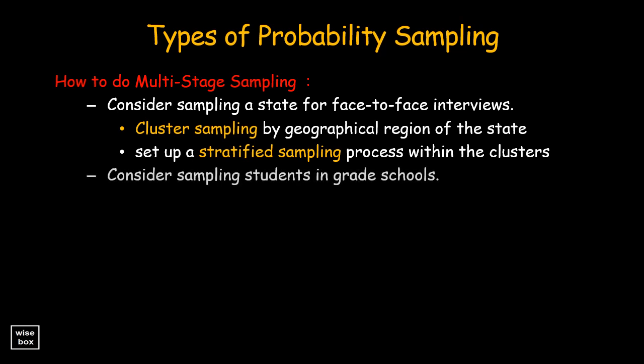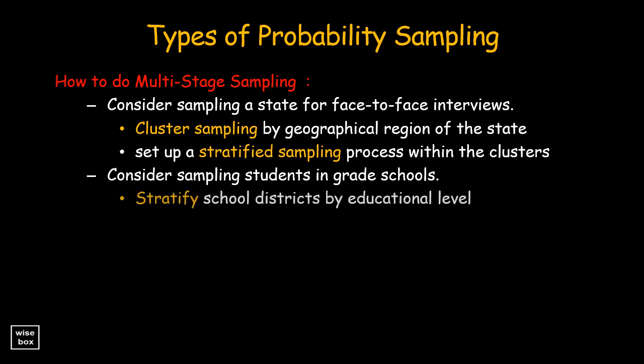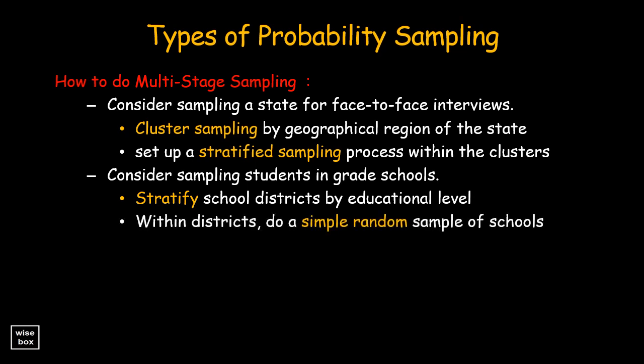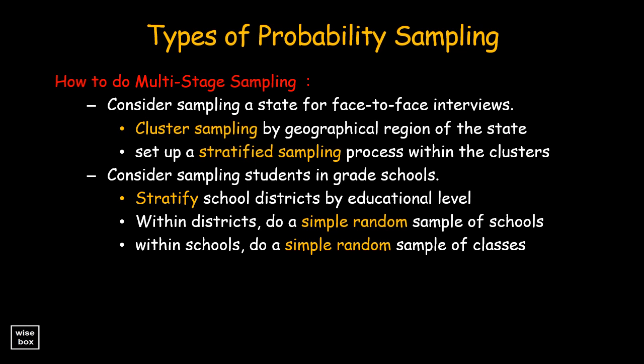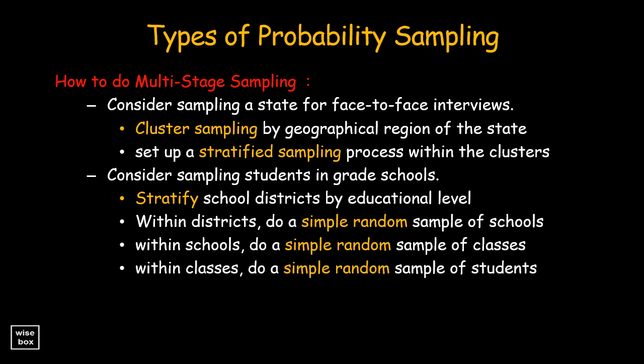Consider the problem of sampling students in grade schools. We might begin with a national sample of school districts stratified by economics and educational level. Within selected districts, we might do a simple random sample of schools. Within schools, we might do a simple random sample of classes. And within classes, we might even do a simple random sample of students. In this case, we have four stages in the sampling process, and we use both stratified and simple random sampling. By combining different sampling methods, we are able to achieve a rich variety of probabilistic sampling methods that can be used in a wide range of research contexts.